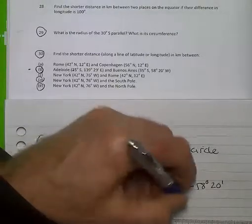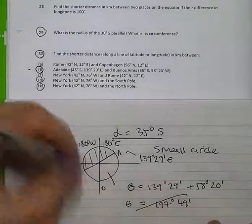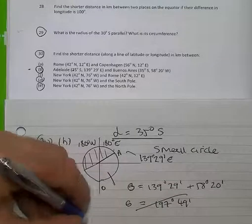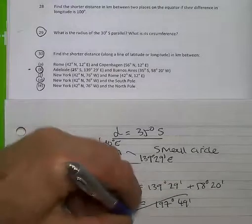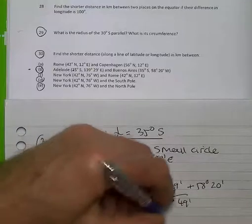49 minutes, which is not going to work. So in other words, I could find the theta smaller by 360, take away the addition of these two.